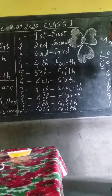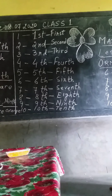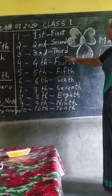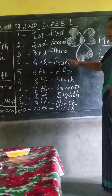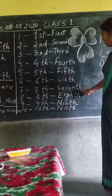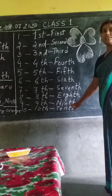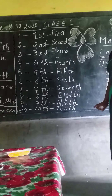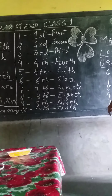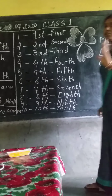So we are studying ordinal numbers: first, second, third, fourth, fifth, sixth, seventh, eighth, ninth, and tenth. In class 1, you should know ordinal numbers from first to tenth.